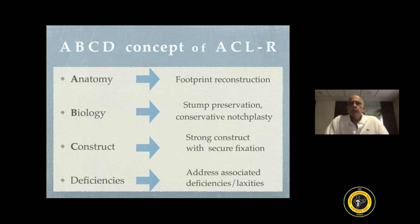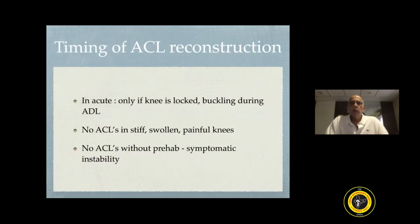You should respect anatomy so that you do a footprint reconstruction of the ACL. You must preserve biology to whatever extent possible. You must have a strong construct both from the point of graft and fixation. And one has to address associated or concomitant deficiencies that may be in the knee. Only this can give you an optimal outcome of surgery.